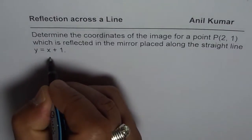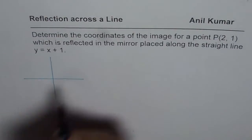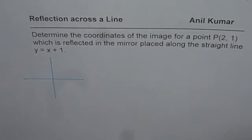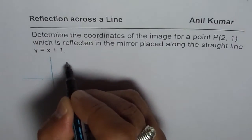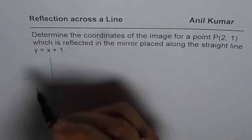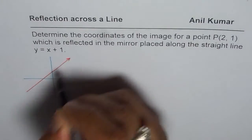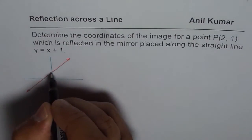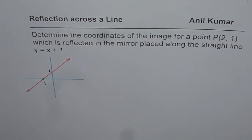Let's try to understand the situation by sketching it first. That's the coordinate plane and we have y equals x plus 1. That means the slope is 1 and the y-intercept is 1. Therefore, we can draw a line. This line has a y-intercept of 1, and since the slope is 1, the x-intercept is minus 1.